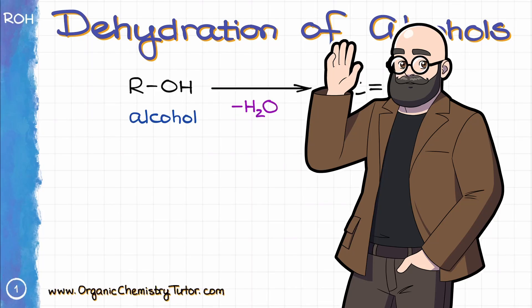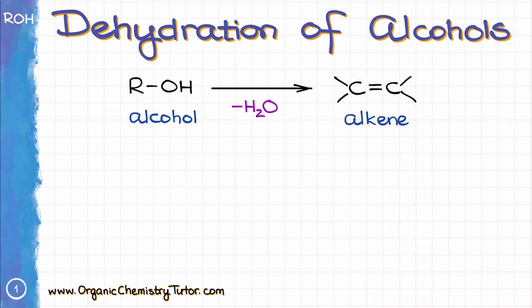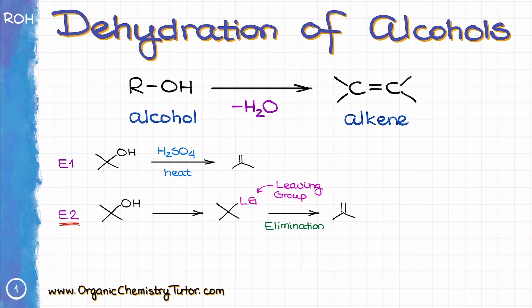Hey everyone, Victor here, your organic chemistry tutor. In this video I want to talk about the dehydration of alcohols. The dehydration of alcohols is an elimination reaction which yields an alkene via water removal. There are two types of alcohol dehydration. The E1 method is based on the dehydration of alcohols in acidic media at high temperatures, and the E2 method is based on the conversion of the alcohol functional group into a good leaving group in non-acidic conditions followed by the elimination reaction. Each method has its own benefits and drawbacks.